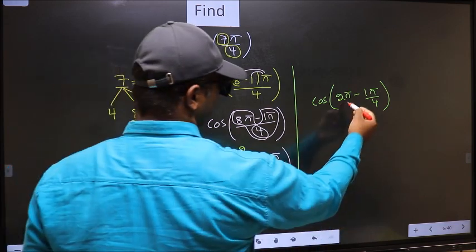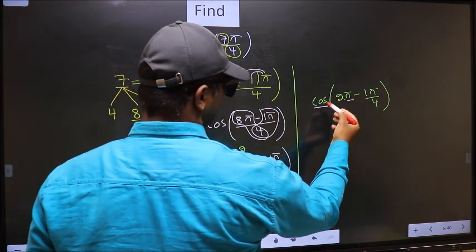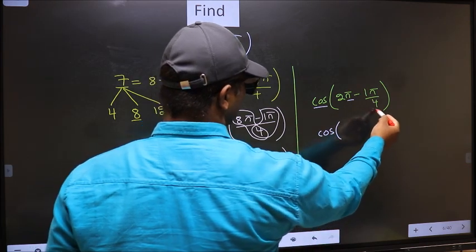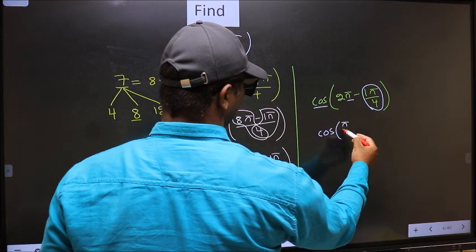Next. Here we have π. So cos is not going to change. It will remain cos. And inside, we get this angle. π by 4.